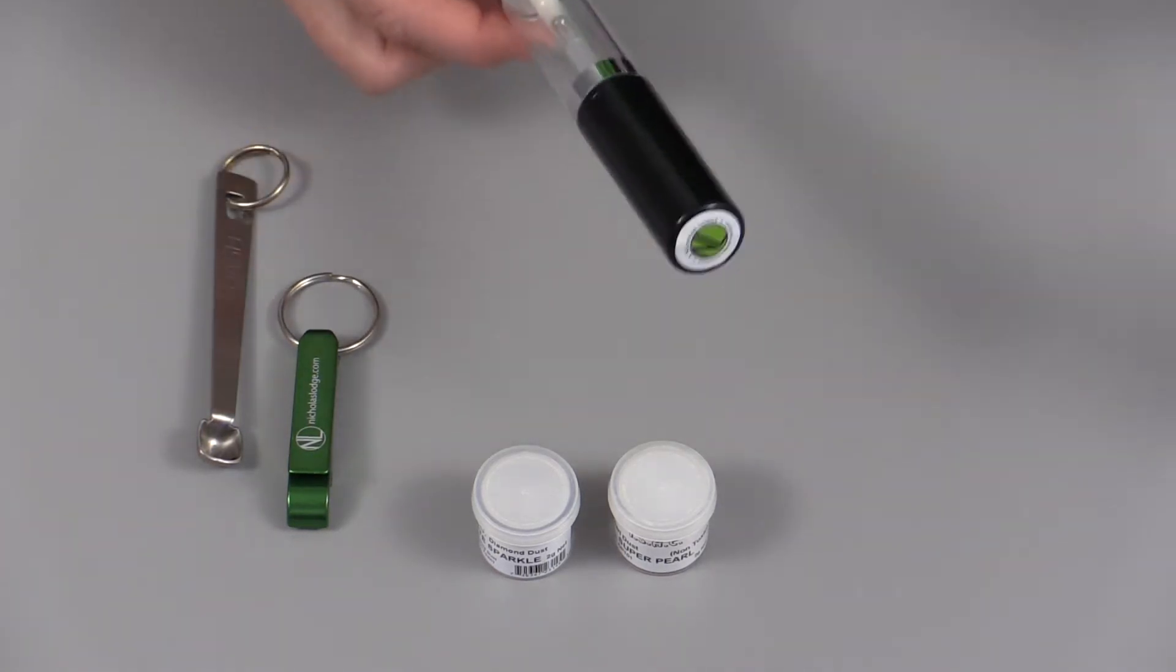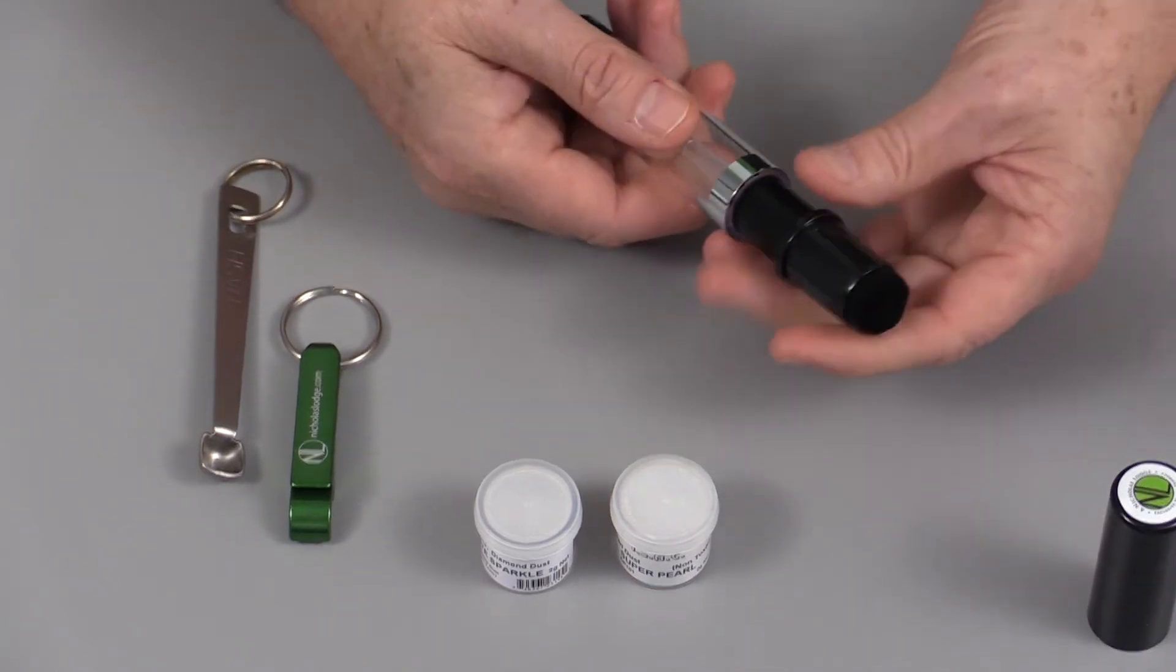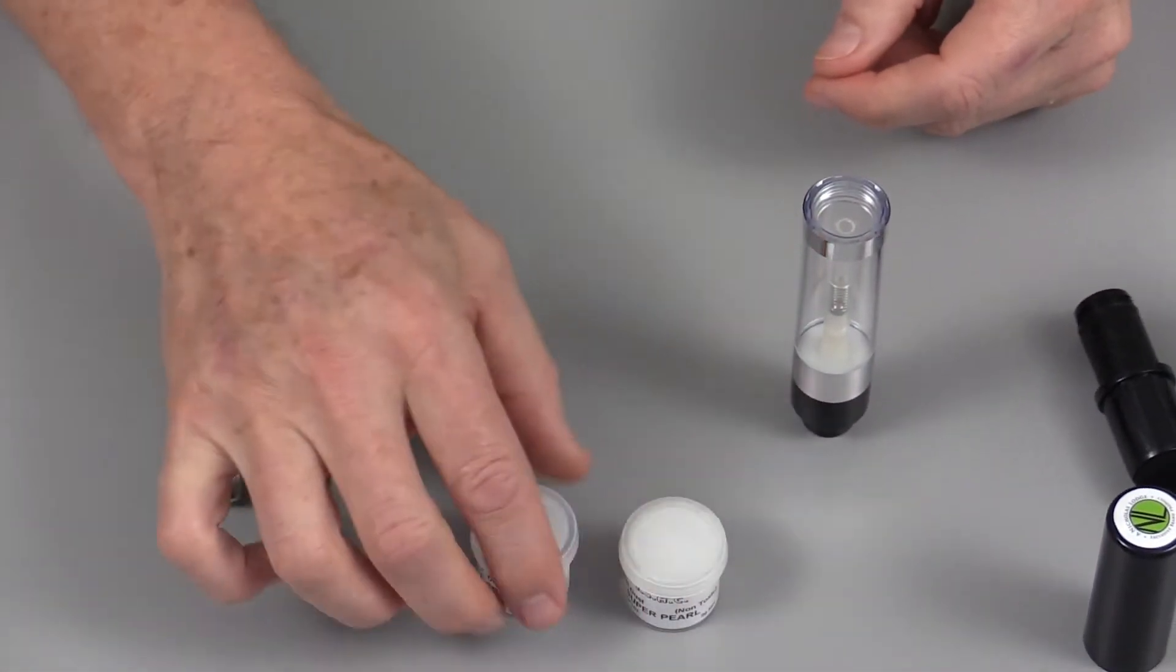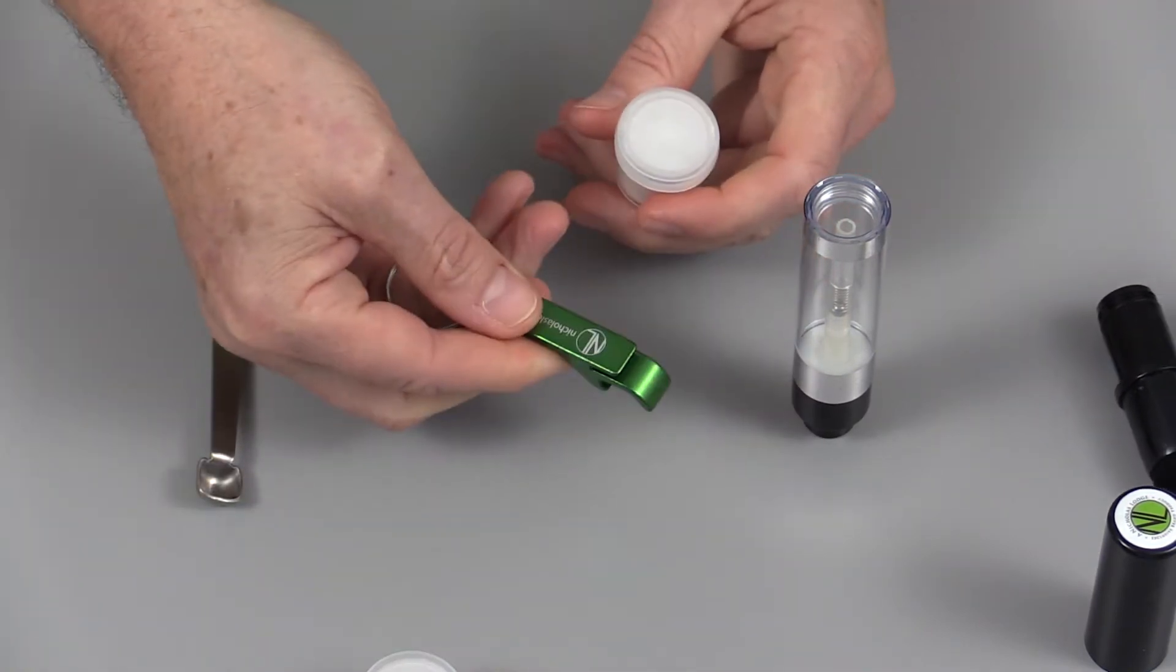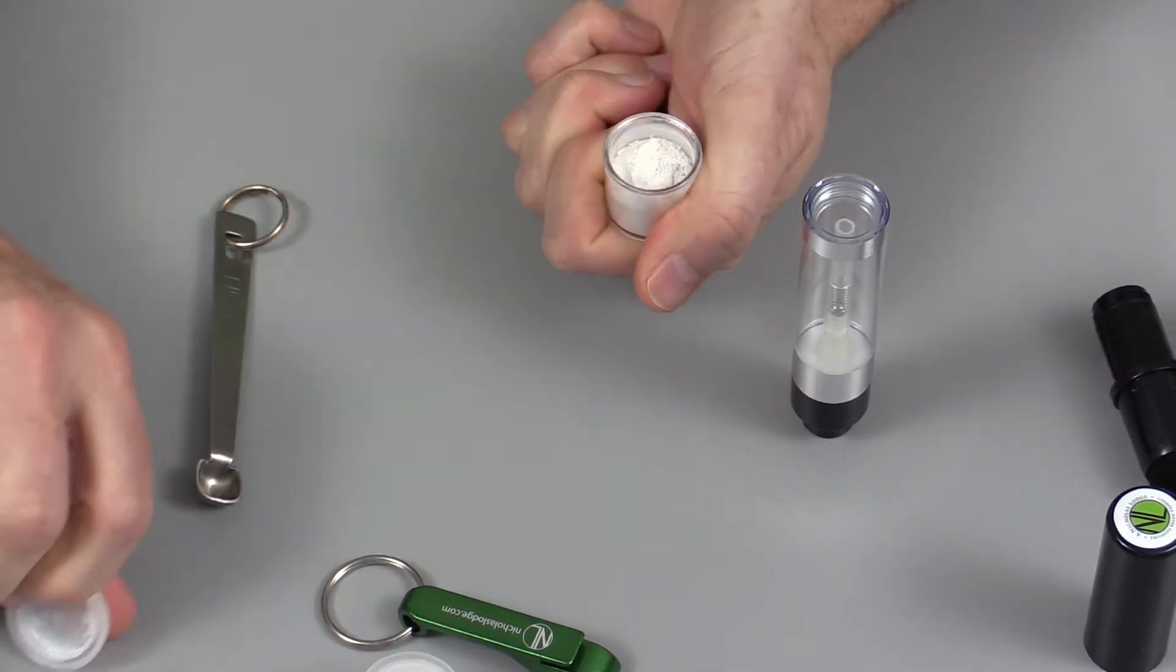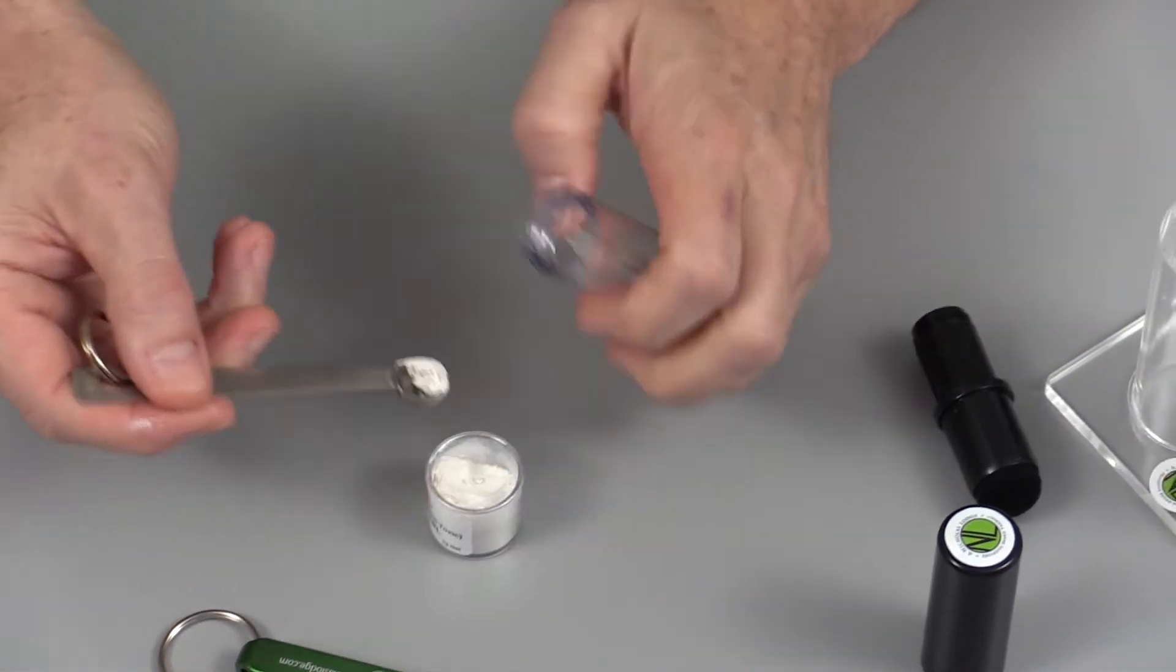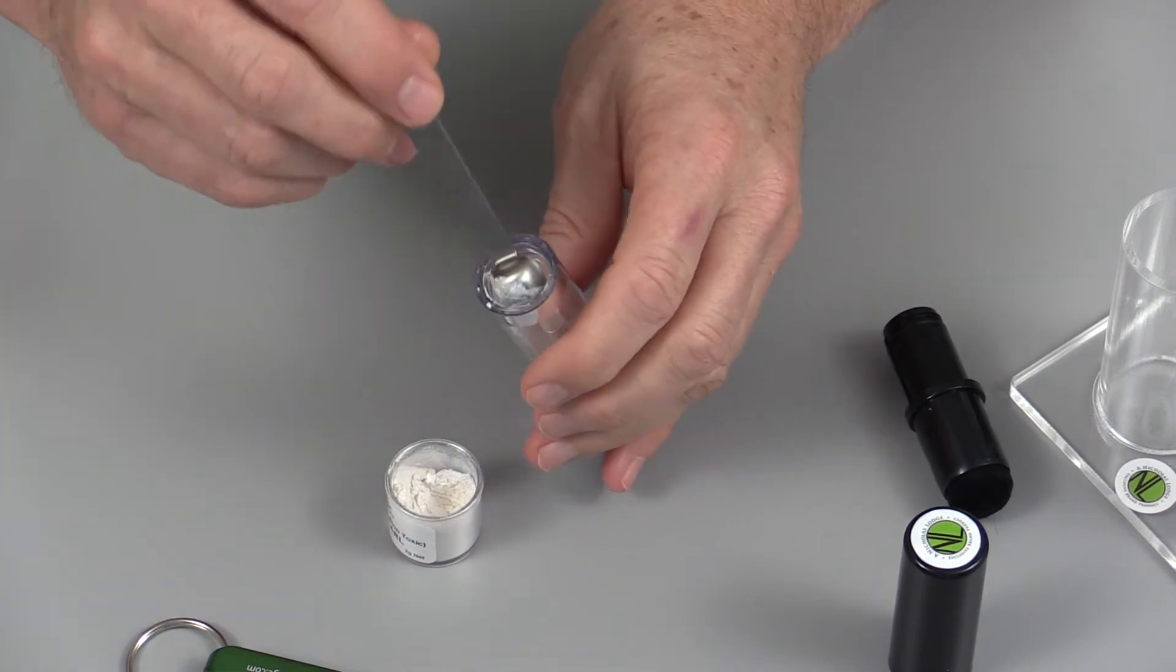When we use this product the top of the pump brush just comes off and then to fill this you actually just unscrew this. Then you're going to take your chosen pearl dust or white sparkle dust. I'm going to open this using a little opener, and then you're just going to use a small spoon like this and put the powder into here.